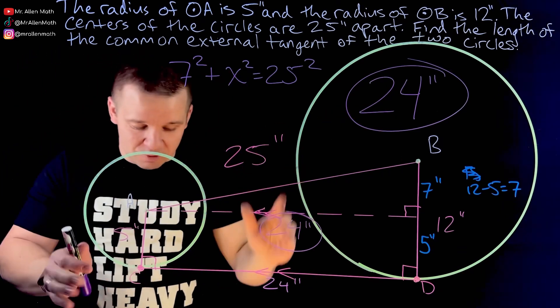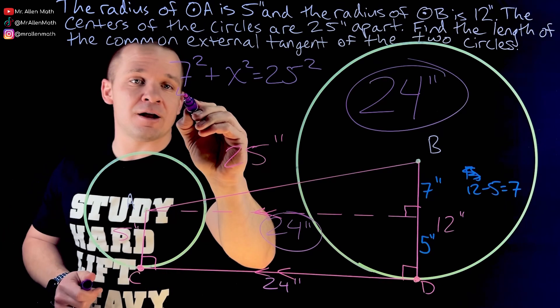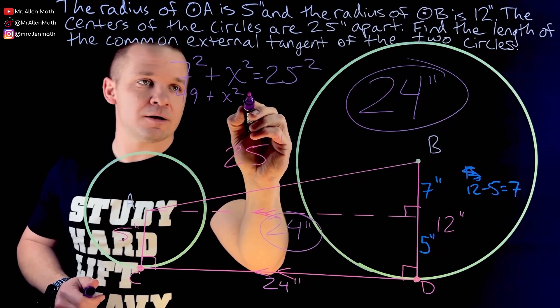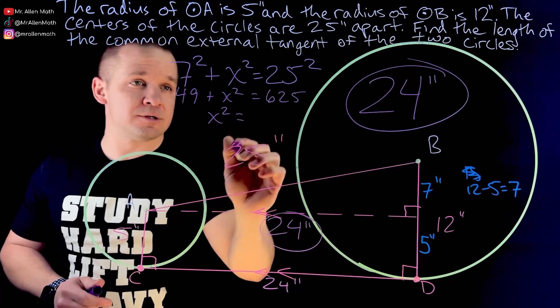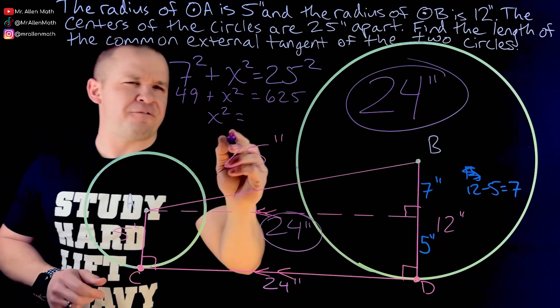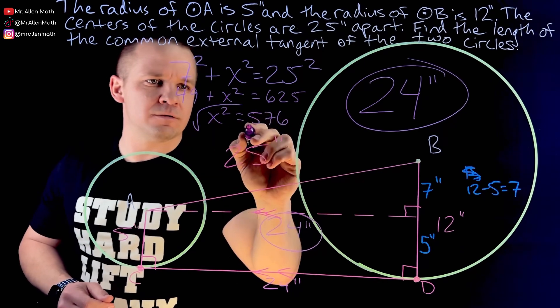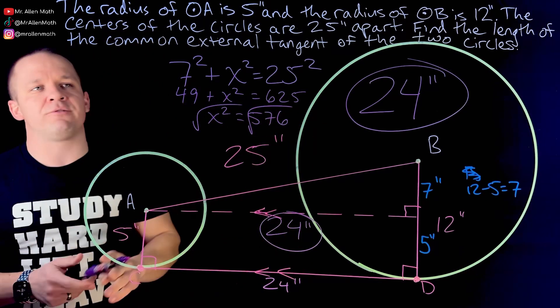Now, if you didn't know the 24, you could do 49 here plus X squared equals 625. Got to subtract that. I'll get X squared equals, is that 576? There we go. Square root, square root. I'm going to get X equals 24.